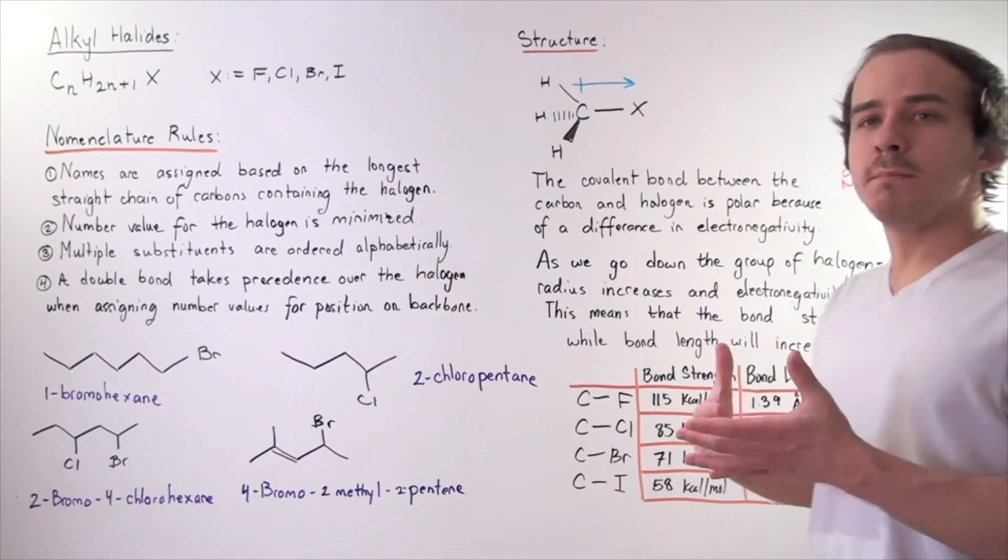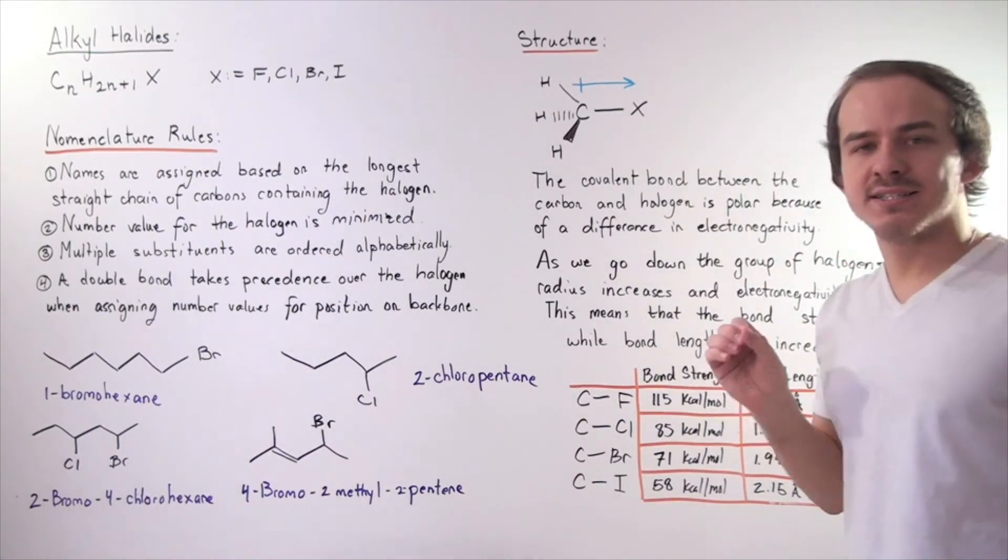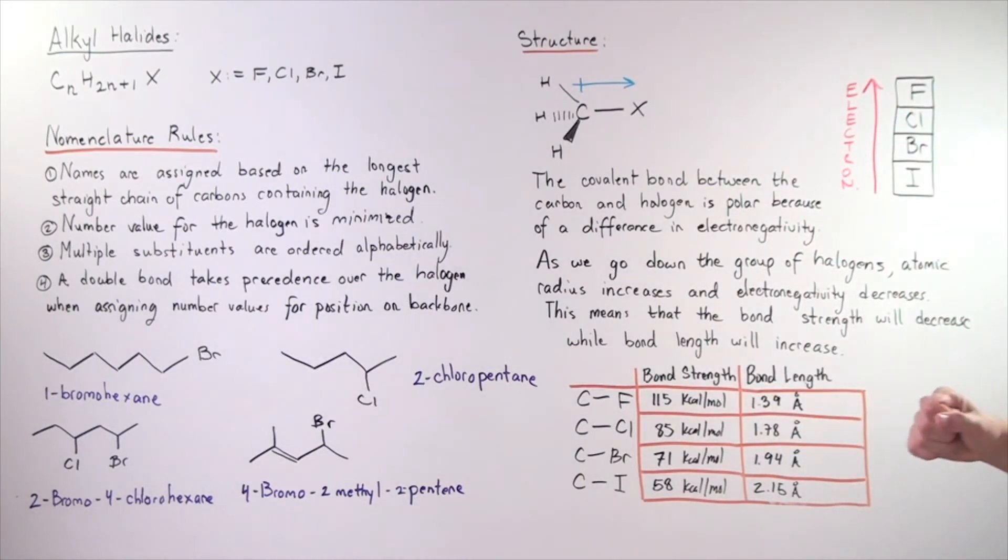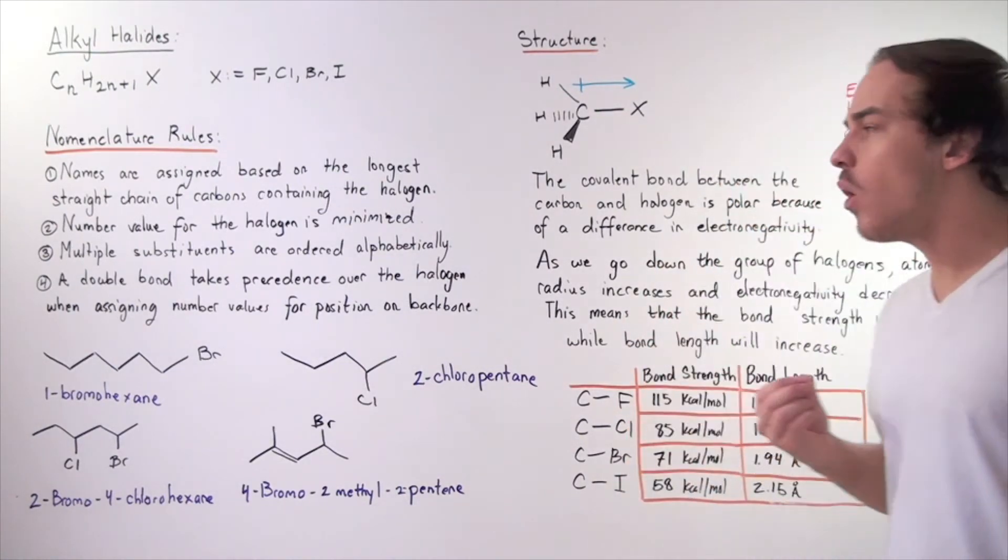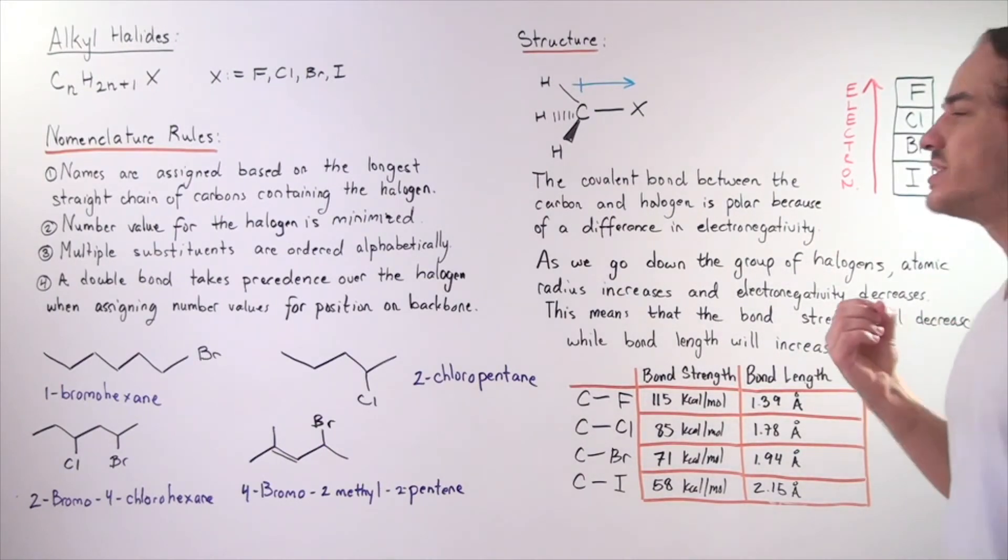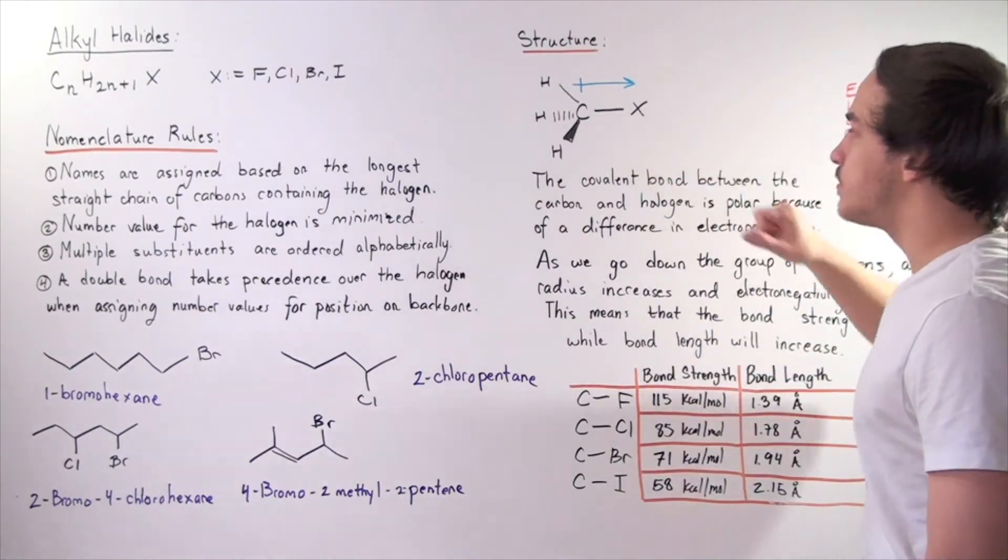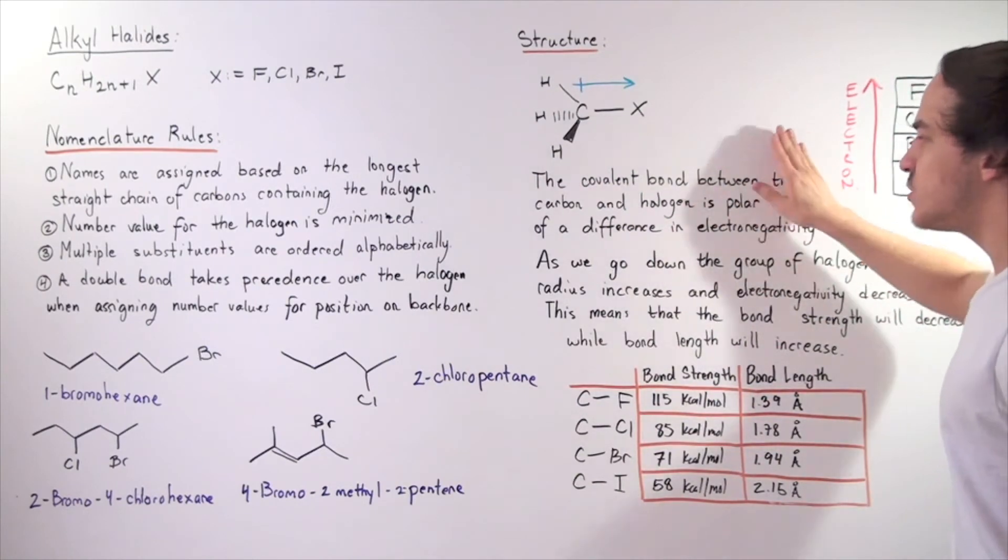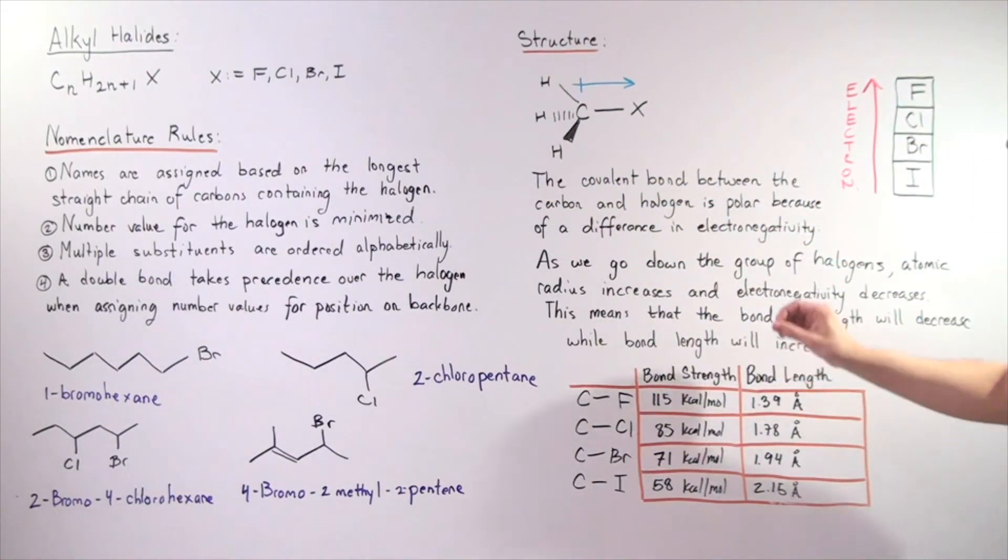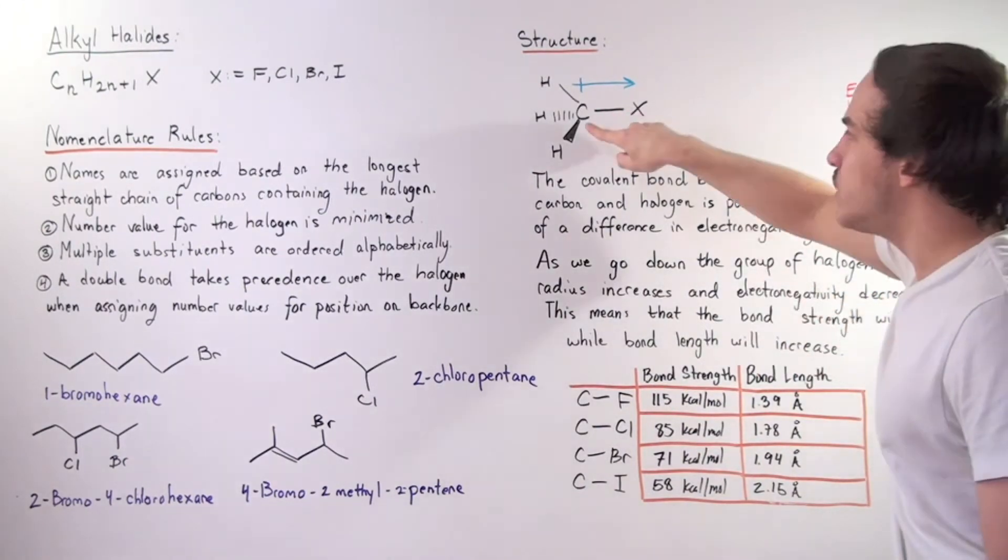What are some periodic trends? As we go up our group, as we go from iodine to fluorine, what happens to our electronegativity? It increases, and that means out of all the halogens, fluorine is the most electronegative and iodine is the least electronegative. What does that say about our carbon-X bond?